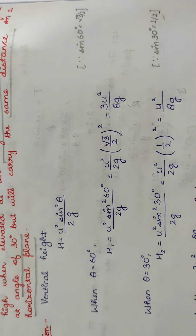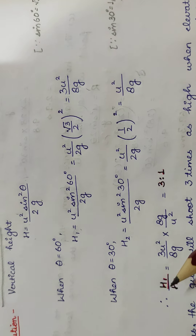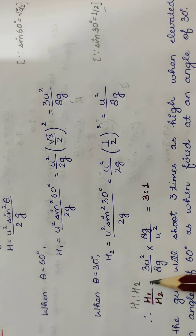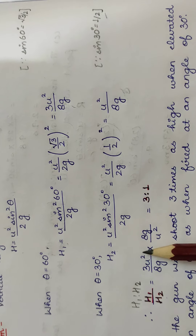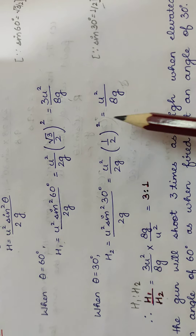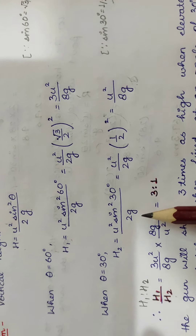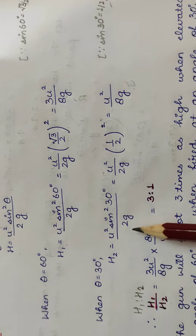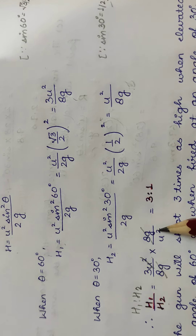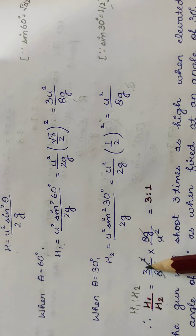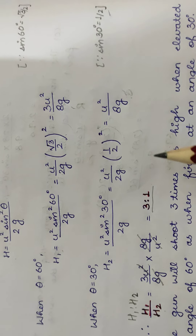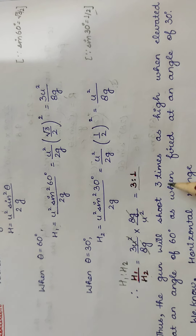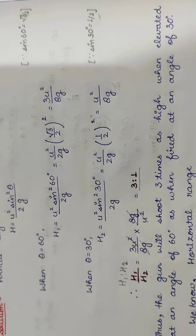Now comparing H1 and H2, finding the ratio H1 : H2, we put H1 = 3u²/8g divided by H2 = u²/8g. Cross-multiplying, the 8g and 8g cancel, and u² and u² cancel, leaving us with 3/1, or 3:1. This proves that the gun shoots three times as high at 60° as at 30°.